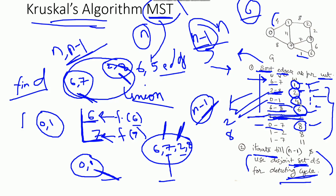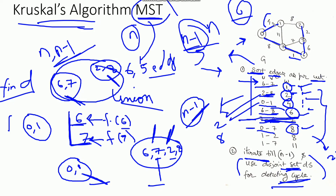We have now iterated n minus 1 edges. The minimum cost of the spanning tree is 1 + 2 + 4 + 6 + 8 = 21. The edges in the spanning tree are: 6-7, 2-8, 0-1, 6-8, and 0-7. In the graph, the blue line edges represent the edges included in the minimum cost spanning tree. Adding all the weights gives a minimum cost of 21.